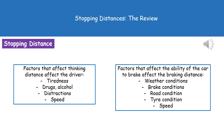One important exam tip: if a question asks what factors will lead to an increase in braking distance, simply writing 'the weather' will not get you a mark. You need to specify the type — for example, icy roads or wet roads. Similarly, you can't just say 'the condition of the brakes'; you would have to say 'poor condition of the brakes.' Be precise so you don't lose easy marks.